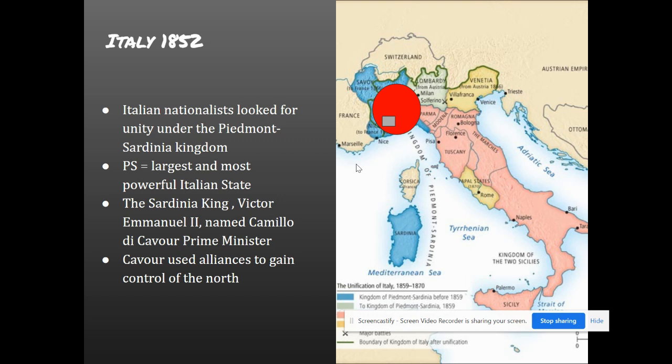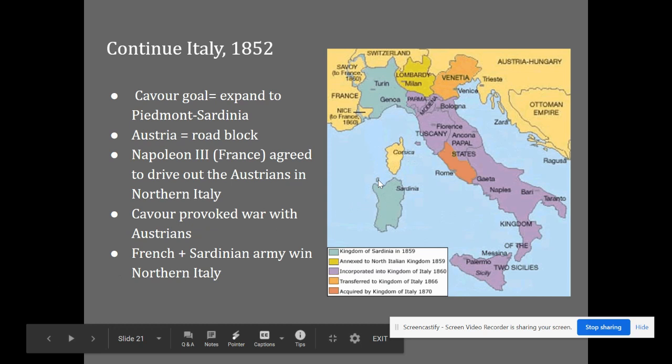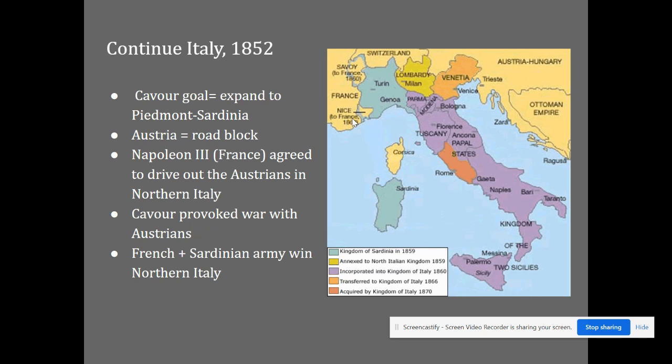Cavour wanted to expand the territory of Piedmont-Sardinia, but there was a roadblock because Austria had a foothold. Austria was here, France was here, and right in the middle was Italy — so this territory was split. Napoleon III of France — not to be confused with the Napoleon we've been learning about — agreed to drive the Austrians out of northern Italy. So Cavour intentionally provoked war with the Austrians, knowing he would have an alliance with France. The French and Sardinian army were able to kick the Austrians out of northern Italy, and Italy was able to take over that territory.